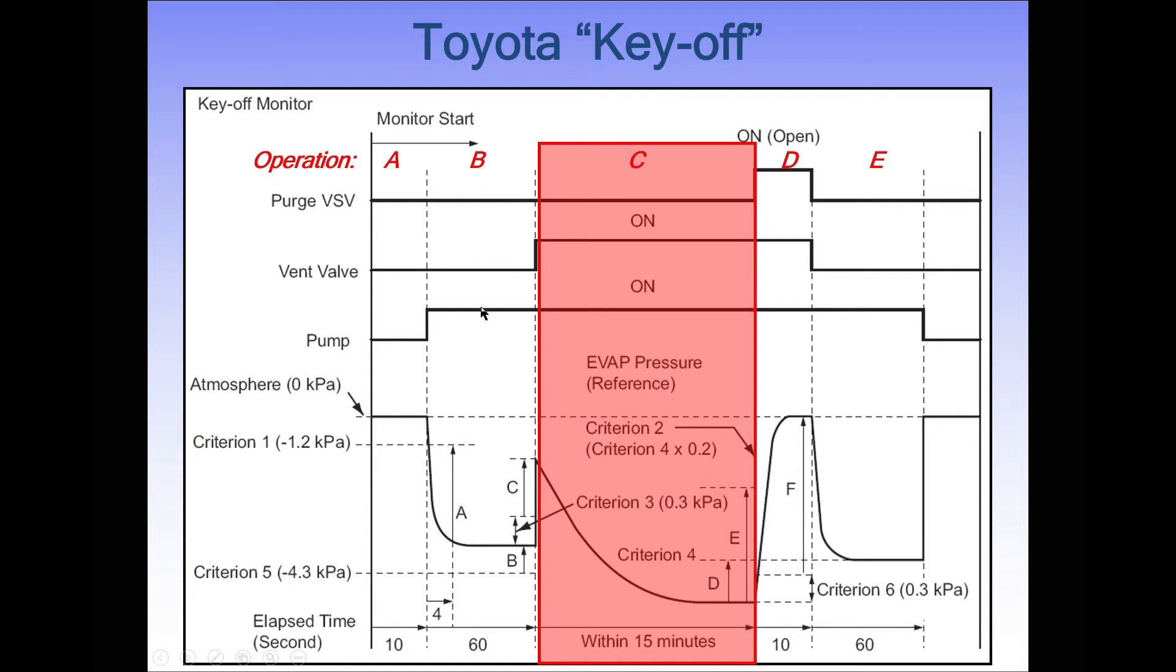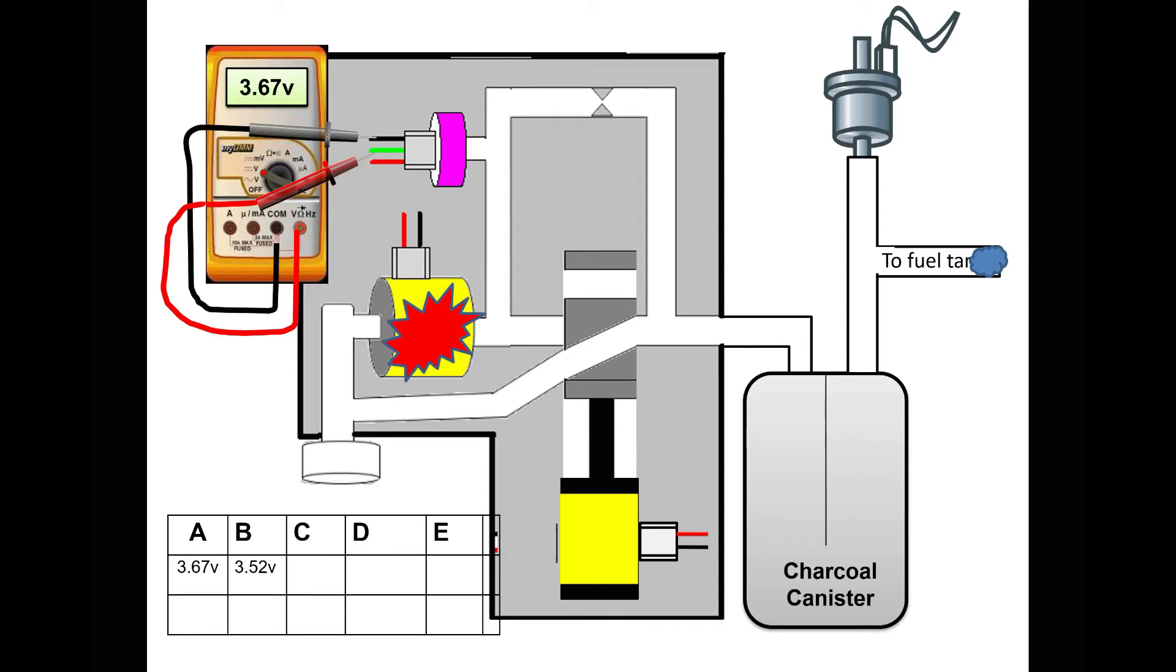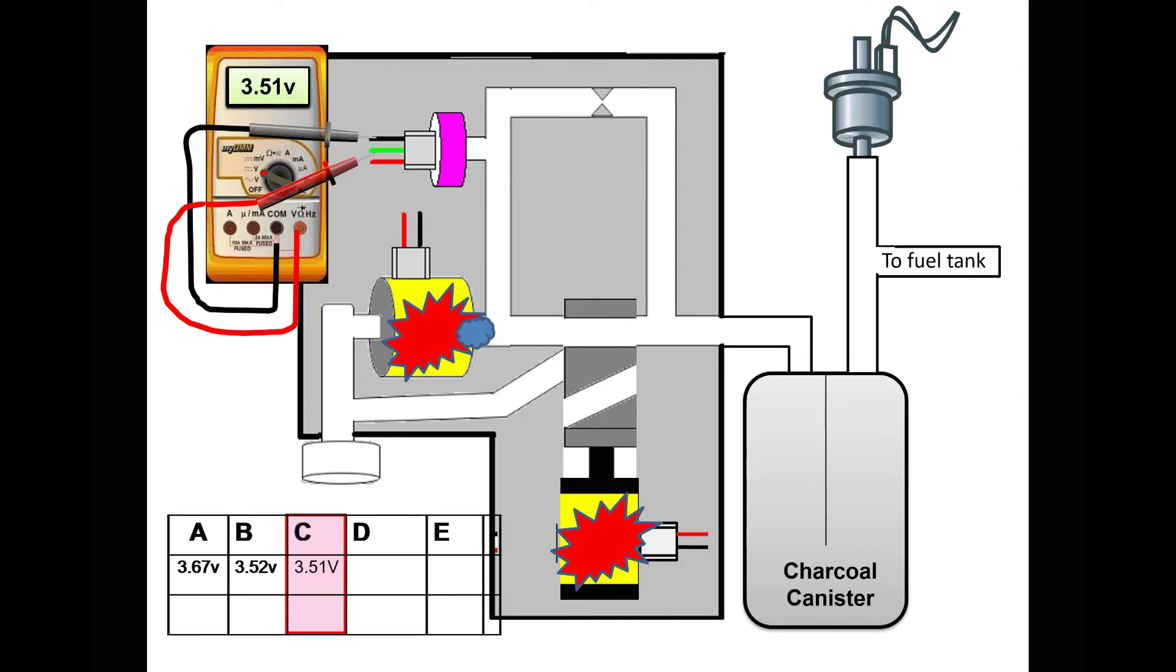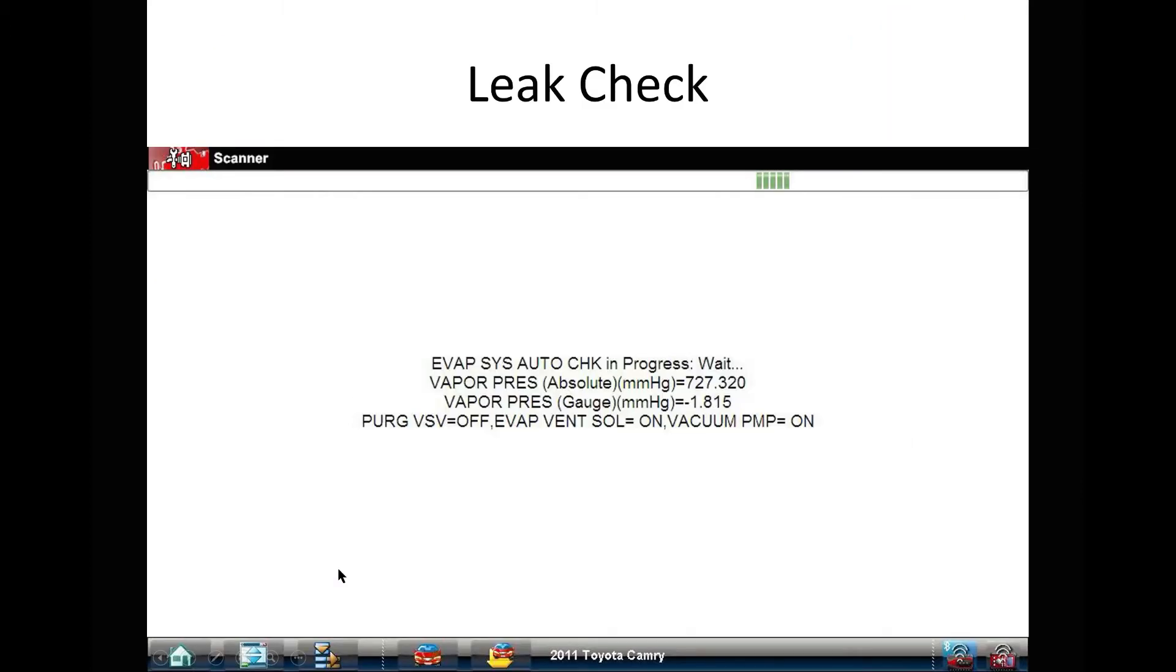Pump is turned on. We activate the vent valve and it's going to plumb my pump to my fuel tank and charcoal canister. Vent valve activates. Pump is now connected to my charcoal canister and fuel tank. We start to pull a vacuum in that system. Let's watch this happen. Purge valve off, vent valve is on, vacuum pump is on. Now I start to build vacuum in the system.